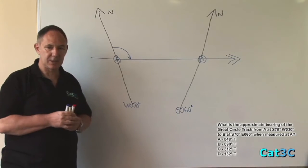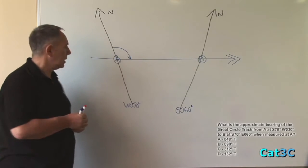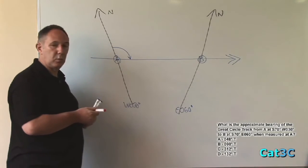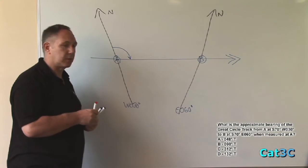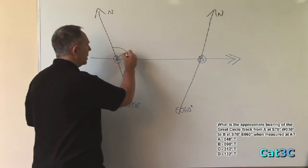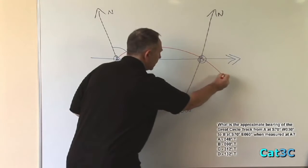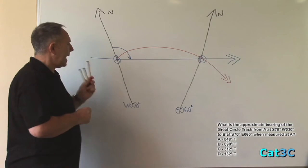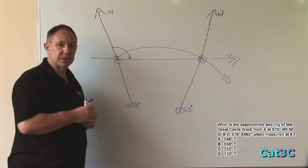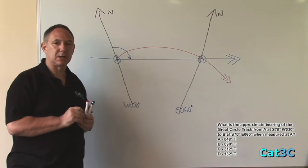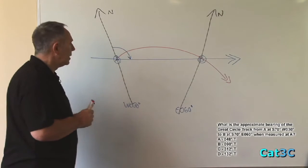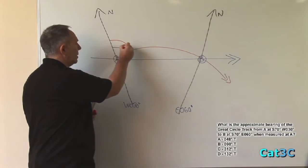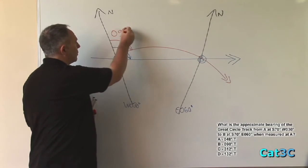Every Great Circle track has a corresponding rhumb line track, so I'll draw the rhumb line track in between A and B. The rhumb line track is always on the equatorial side of the Great Circle, so in this case it will be bent upwards away from the Great Circle track. Being that A and B are on the same latitude, the rhumb line track will follow that parallel of latitude. And as it is following a parallel of latitude, it has a constant bearing of 090 degrees true.